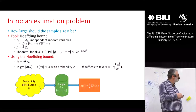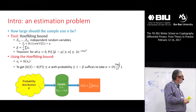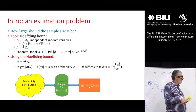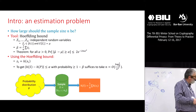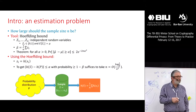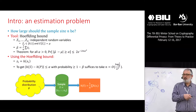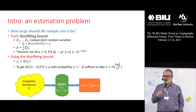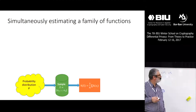We compute the estimate mu-hat, which is the average of the realizations of these random variables. Then with high probability, the estimate does not deviate too much from the expectation. More accurately, we will see deviation larger than alpha with probability that goes down exponentially with the sample size n. Using this simple tool, we can answer: how big should n be? To get that this difference is small with probability 1 minus beta, it suffices to take a number of i.i.d. examples that depends naturally on accuracy alpha and confidence beta.